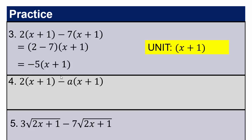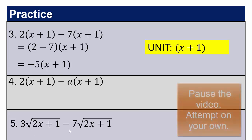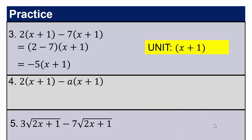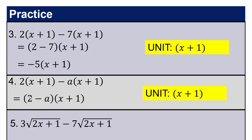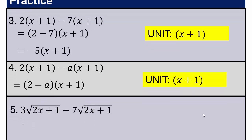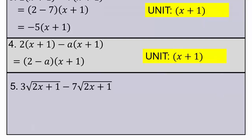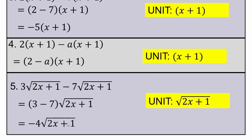Next problems — identify like units and combine. For 2(x+1) minus a(x+1): since 2 and a cannot be combined, we write (2−a) copies of (x+1). For 3√(2x+1) minus 7√(2x+1): the like unit is √(2x+1); we have 3 minus 7 of them, giving −4√(2x+1).